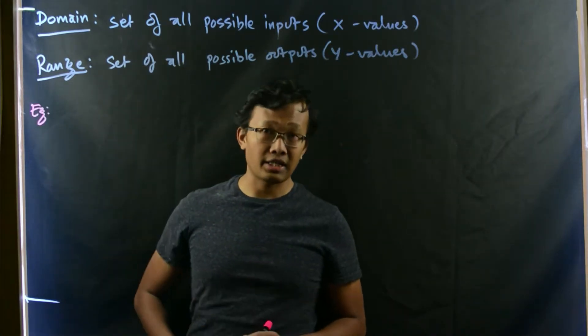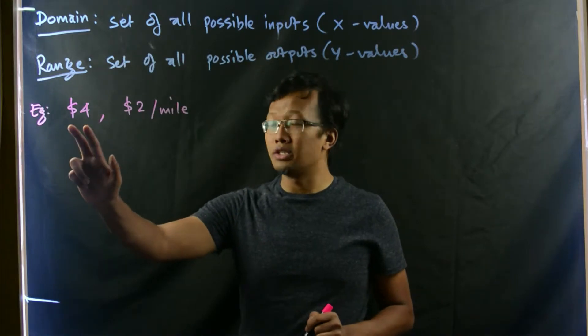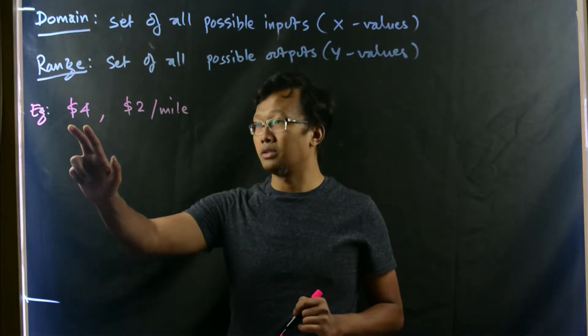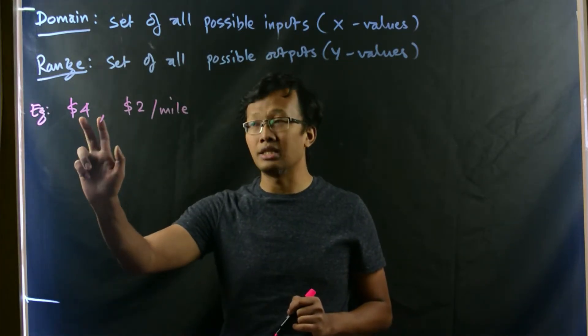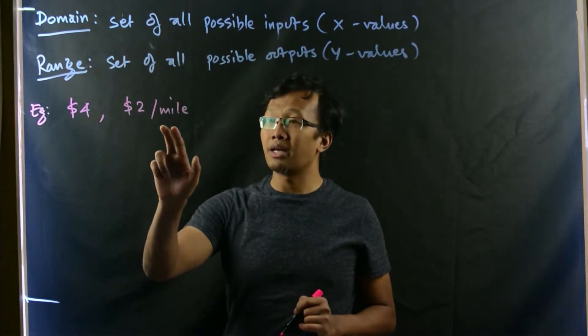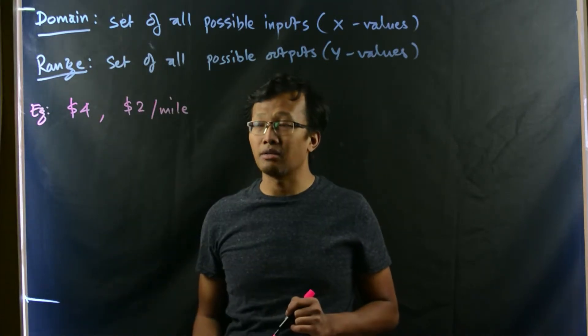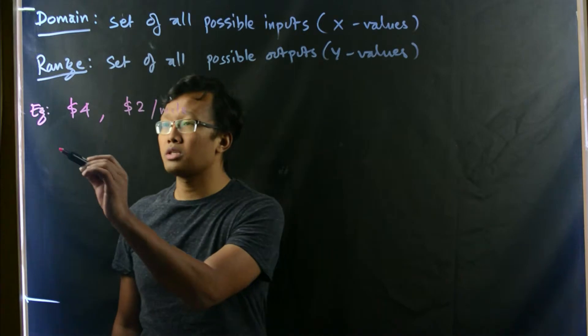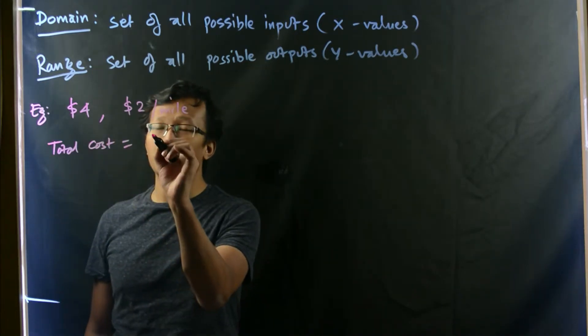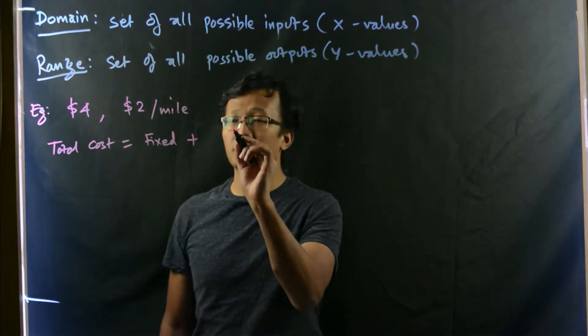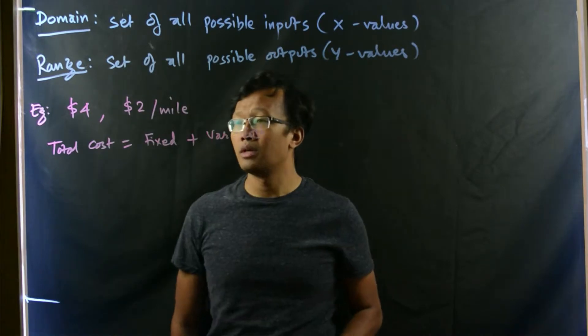Let's suppose you rent a taxi. Let's suppose $4 is your initial fee. Whenever you get inside the taxi, it is charged, and whenever you drive a mile, it is $2 per mile. Then the total cost would be simply the fixed cost plus the variable cost.